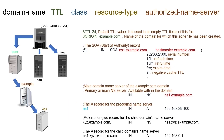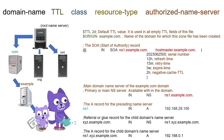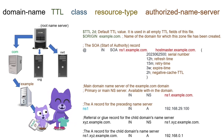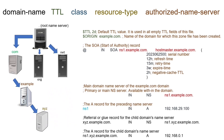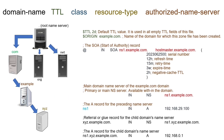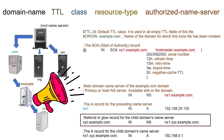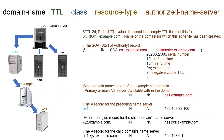A resolver system can access a name server only from its parent domain. Because of this, we need to create an NS record for each name server in its parent domain's zone file. An NS record created in the parent domain's zone file is known as a referral name server record or a glue name server record.